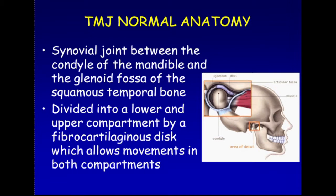The temporomandibular joint is a synovial joint between the condyle of the mandible and the glenoid fossa of the squamous temporal bone. It is divided into a lower and upper compartment by a fibrocartilaginous disc that allows movements in both compartments.